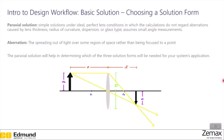A fundamental component of solving for the paraxial solution is ray tracing. Ray tracing is the act of mechanically tracing a ray through an optical system while calculating angles of refraction and reflection at each surface — this is the primary method to determine a system's optical performance. You can learn more through the Optics Academy course number two, called Optics Review.